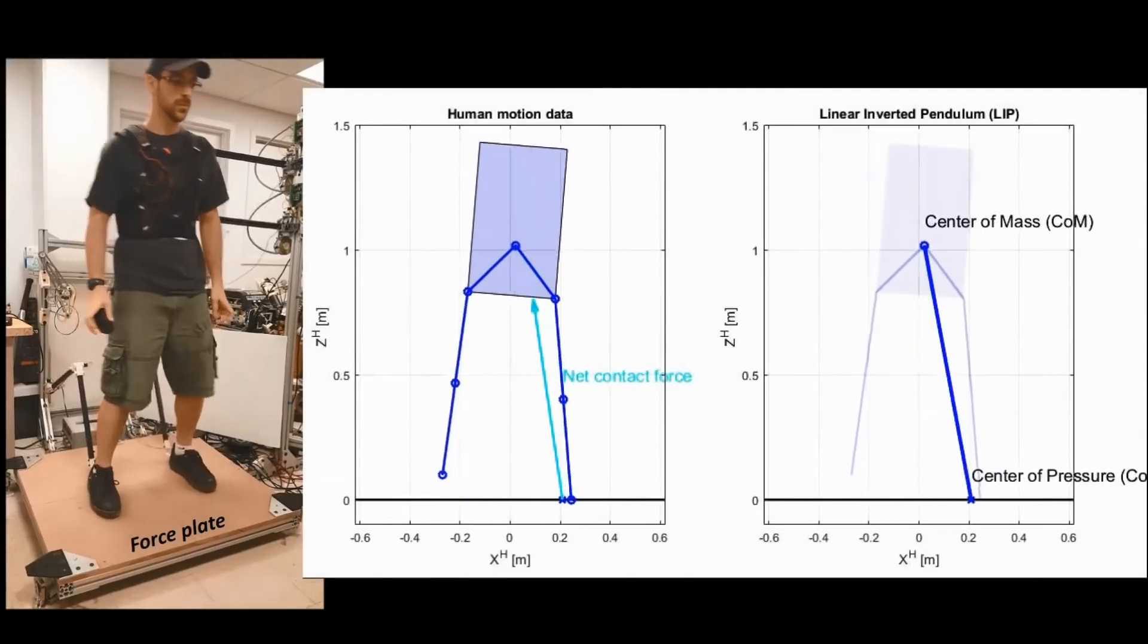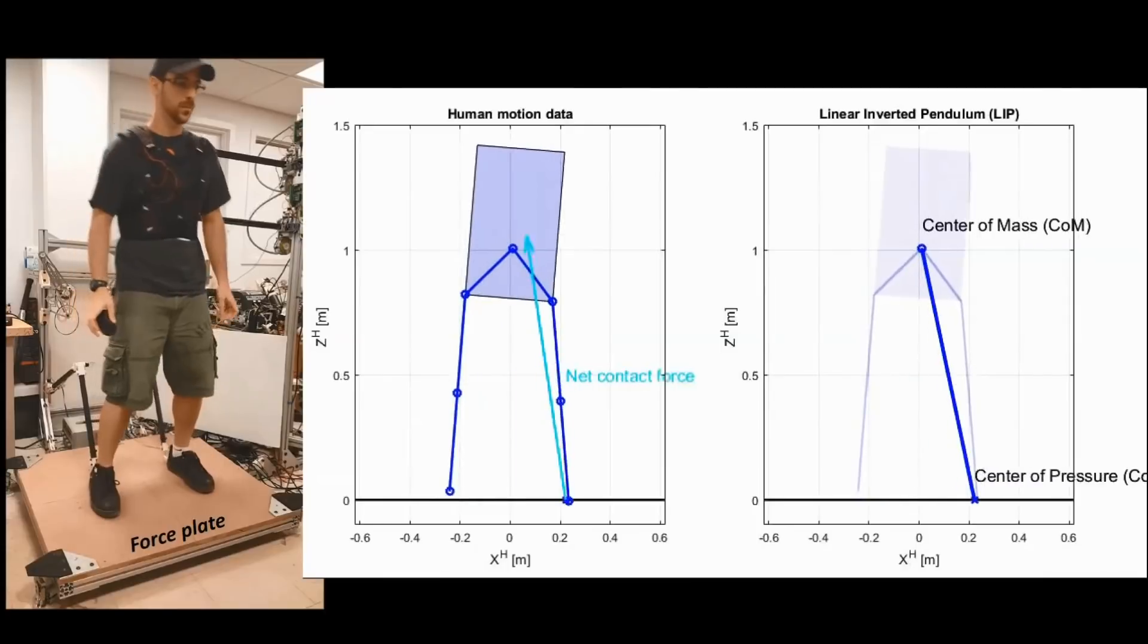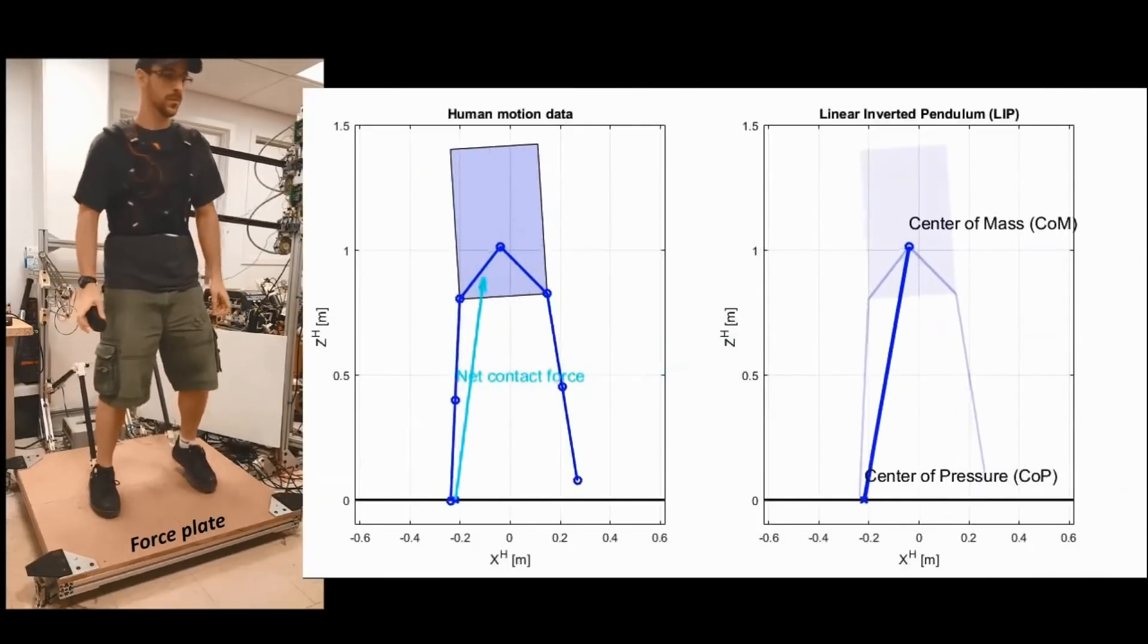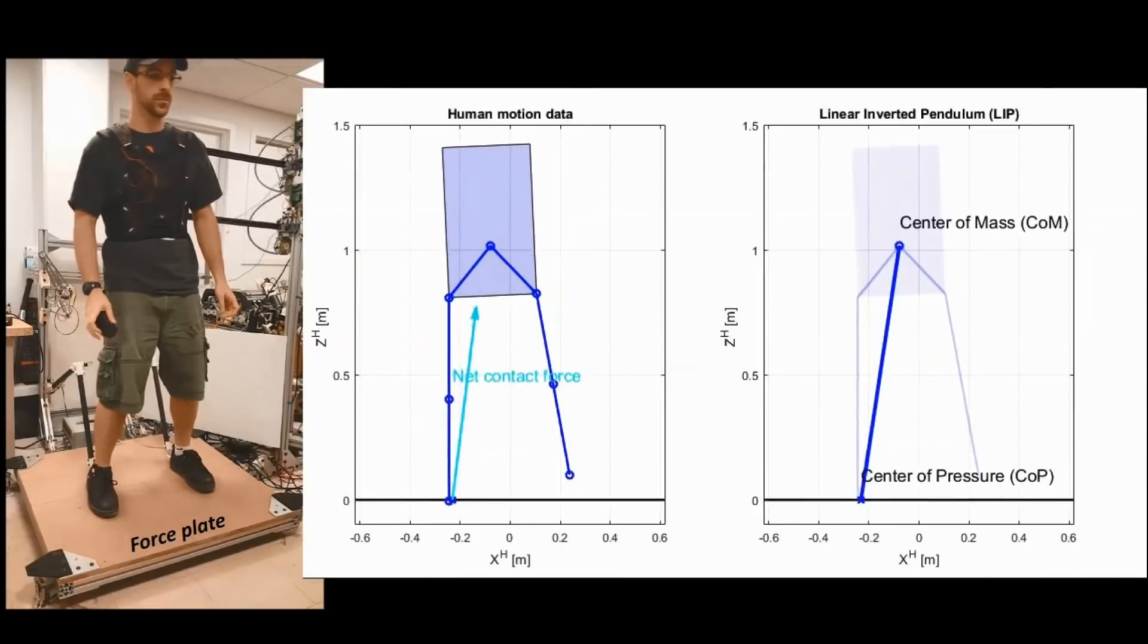We condense this information using a simple model for leg locomotion, the linear inverted pendulum, which is represented by the line that connects the center of mass and the center of pressure.